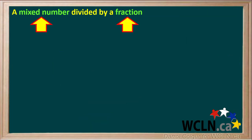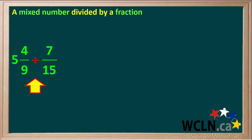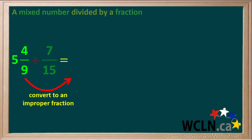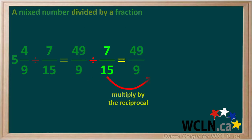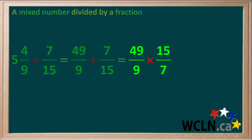Now we'll go over an example of a mixed number divided by a fraction. Our example is the mixed number 5 and 4 ninths divided by the fraction 7 fifteenths. We'll start by converting the mixed number 5 and 4 ninths to an improper fraction. The denominator will be 9, and the numerator will be 5 times 9, which is 45 plus 4, which is equal to 49. So our problem is 49 over 9 divided by 7 over 15. Dividing by a fraction is the same as multiplying by its reciprocal, which is 15 over 7. So the question now is 49 over 9 times 15 over 7.